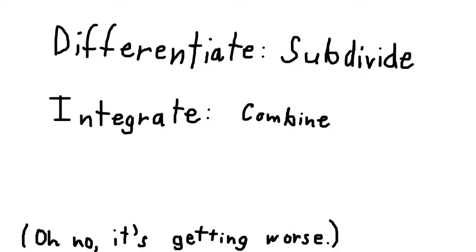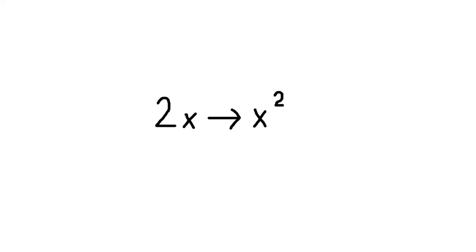To integrate, we do the inverse of differentiating. Instead of multiplying by the original power and decreasing the power by one, we increase the power by one and divide by that newly created power. So 2x when integrated becomes x squared because the power increases by one and then we divide by that new power.